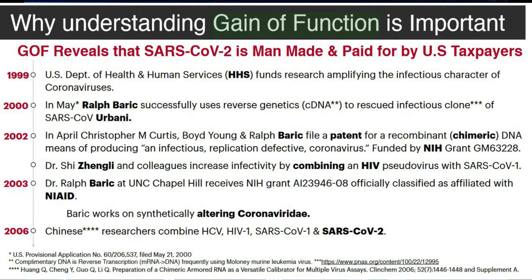In 1999, Health and Human Services started funding for this. In 2000, Baric began successfully making new viruses using complementary DNA. In 2002 they got a patent paid for by NIH — that's Fauci and Collins. Shi Zhengli admits in 2002 that she put pseudovirus HIV glycoprotein 120 into Baric's work. In 2003 Baric gets another grant for altering coronaviruses. Universities across the country — Iowa, Texas Galveston, Wisconsin — have been doing gain-of-function research that taxpayers funded.